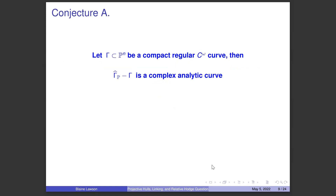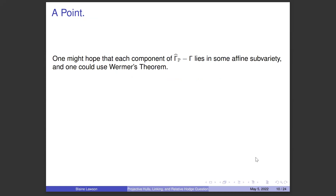Conjecture A is: suppose you have a compact, regular, real analytic curve — then the projective hull minus the curve should be a complex analytic curve. This is the projective analog of Wormer's theorem of 1958. The complex analytic curve may possibly be empty, and the boundary of this variety will be a certain number of components of gamma. One might hope each component of the projective hull minus the curve could be found to lie in some affine subvariety, so that one could use Wormer's theorem with some sophistication — but it turns out this is not true.